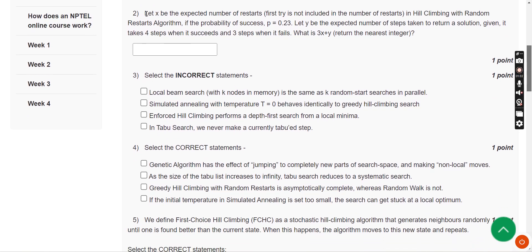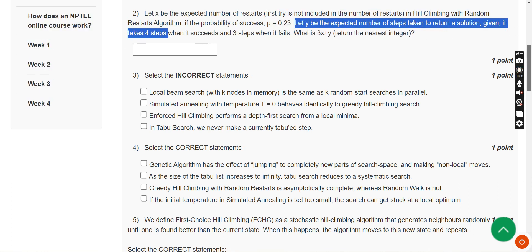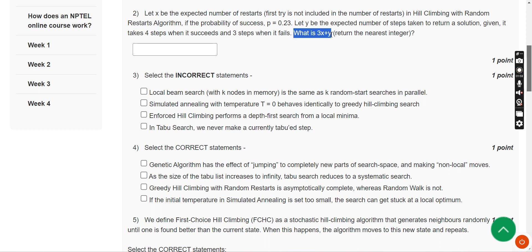Here they have given a problem. Let X be the expected number of restarts—that means the first try is not included in the number of restarts—in hill climbing with random restarts algorithm. If the probability of success (p) equals 0.23, let Y be the expected number of steps taken to return a solution given it takes 4 steps when it succeeds and 3 steps when it fails. What is 3X plus Y? The answer will be in some decimals but we have to round it off to the nearest integer.